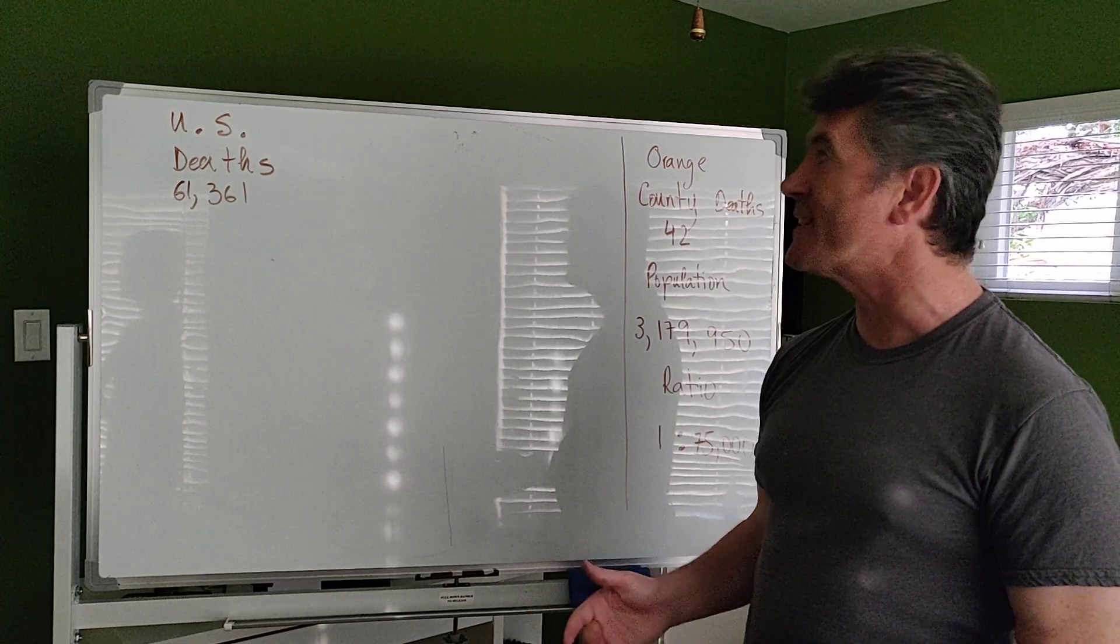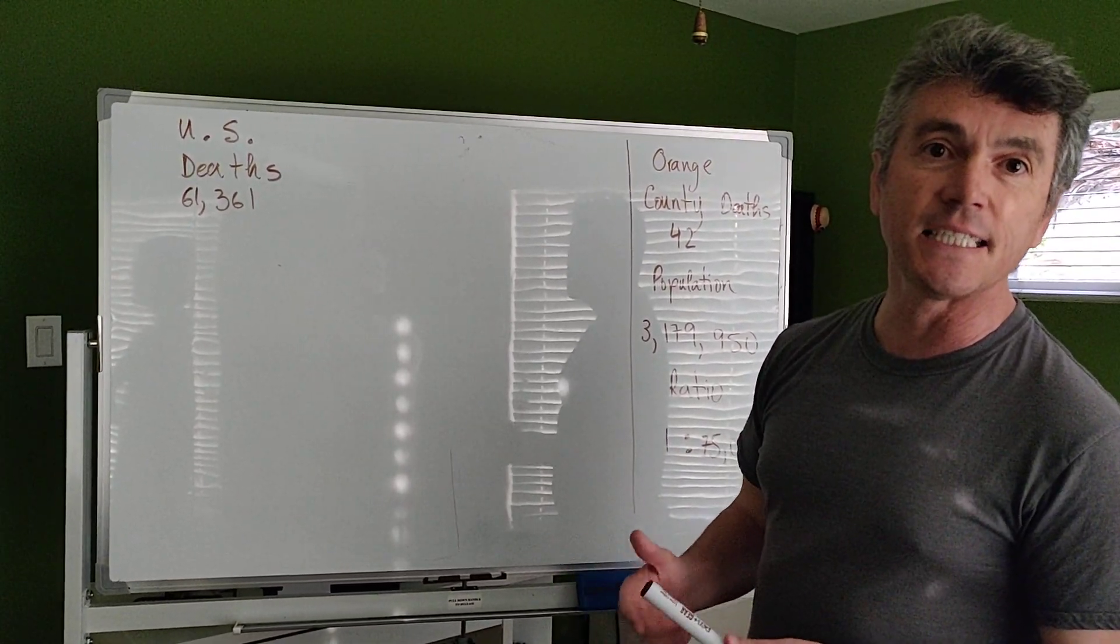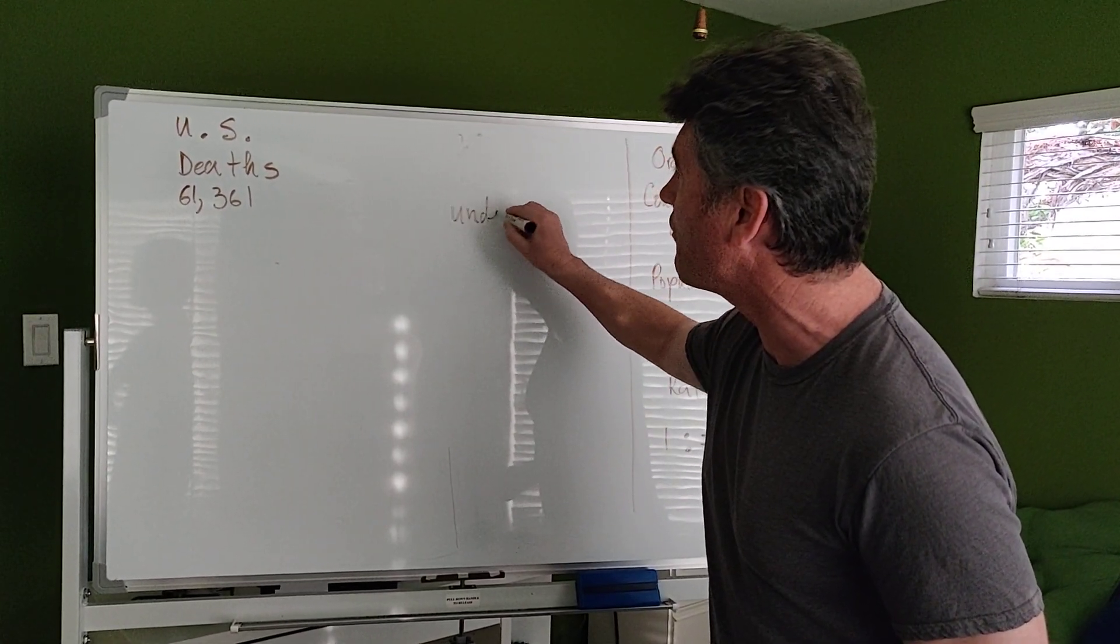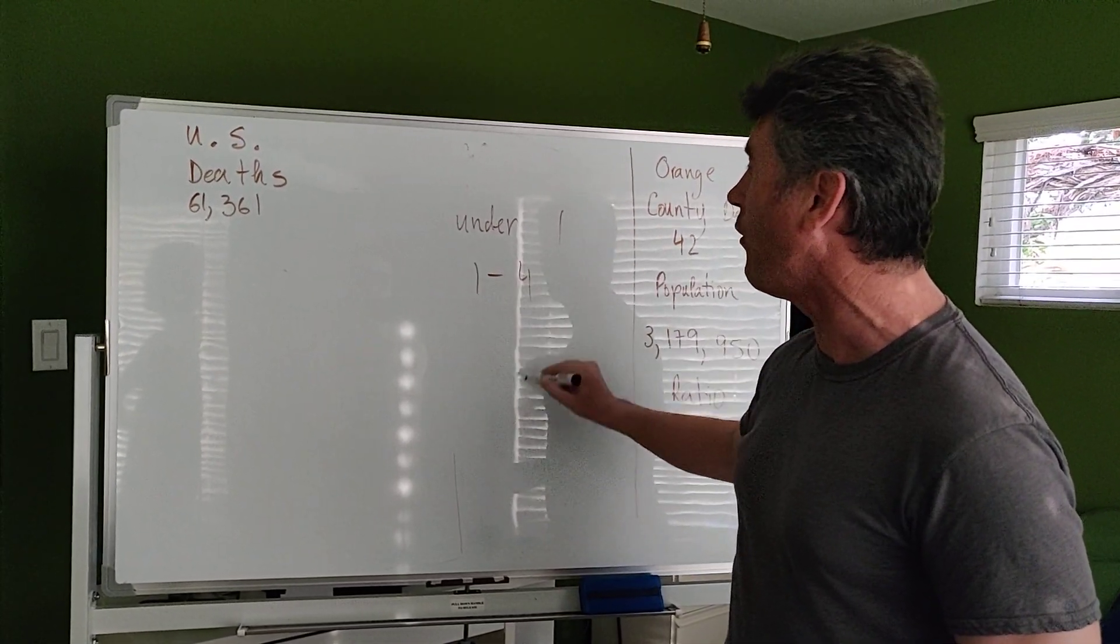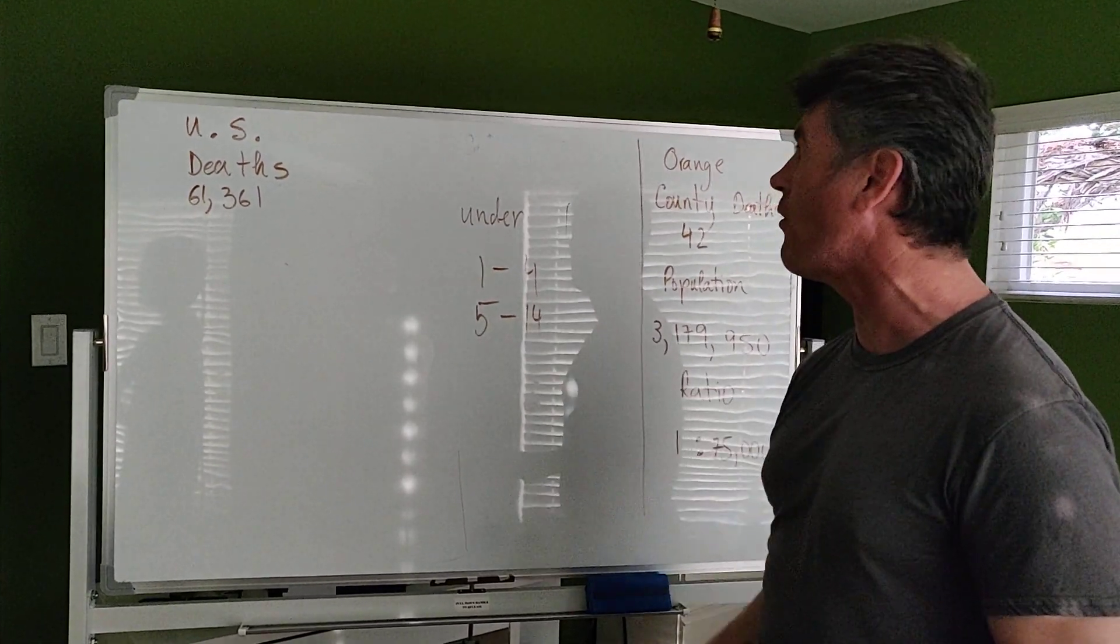How about you give the deaths in terms of ages, like they do it on the CDC website. For example, you could tell us how many people under the age of 1 have died, how about between 1 and 4, how about between 5 and 14, and so on.